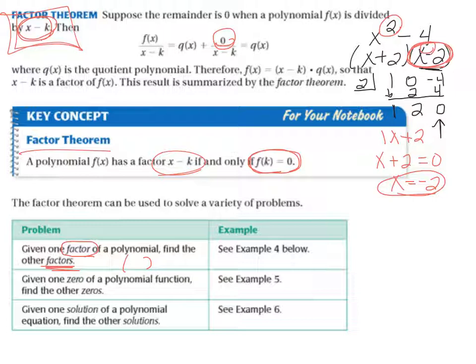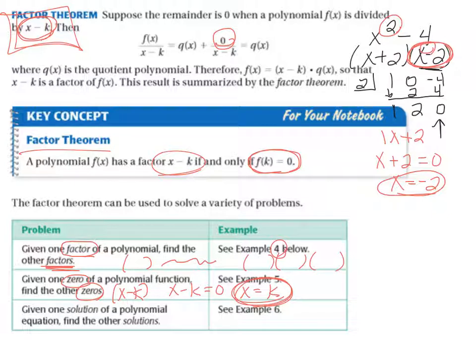If I'm given one binomial factor and a polynomial, I can find all the other factors. Given one zero of a polynomial, find the other zeros. A zero is when we take a factor x minus k, set it equal to zero, and solve: x equals k. Given one solution, find the other solutions — we call solutions zeros back and forth.